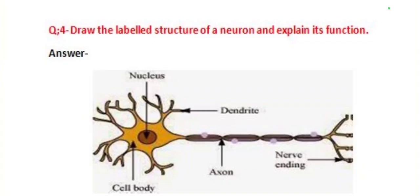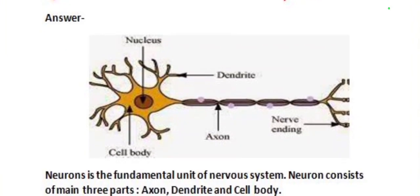Our next question is: draw the labeled structure of a neuron and explain its functions. To draw the structure of a neuron, it consists of the following parts: nucleus, cell body, dendrite, axon, and nerve endings. You have to draw this labeled diagram.